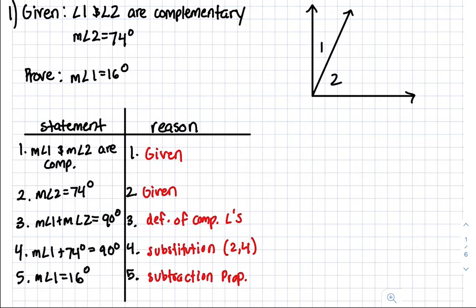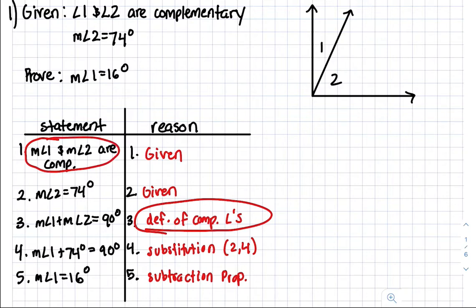The reason for step 3 is the definition of complementary angles, because look at what was given to us. In the given statement we have measurement of angle 1 and measurement of angle 2 are complementary angles. So that should indicate that if 1 and 2 are complementary, then both of those angles add up to 90 degrees — because that's literally the definition of complementary angles.